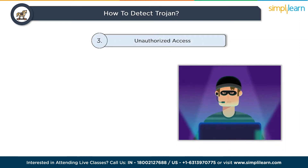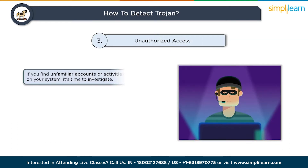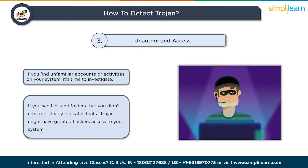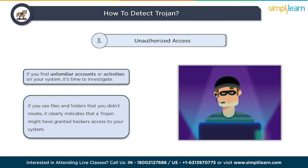Unauthorized access is another warning sign. If you find unfamiliar accounts or activities on your system, it's time to investigate. If you notice unauthorized accounts on your computer or see files and folders that you didn't create, it clearly indicates that a trojan might have granted hackers access to your system. This could lead to data theft or even remote control of your computer.